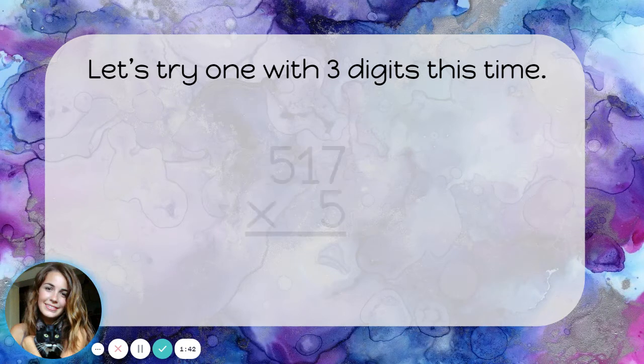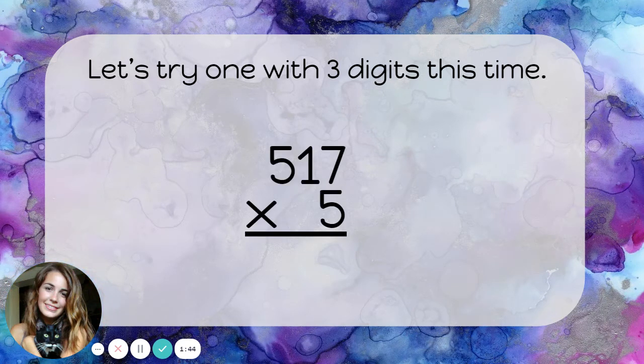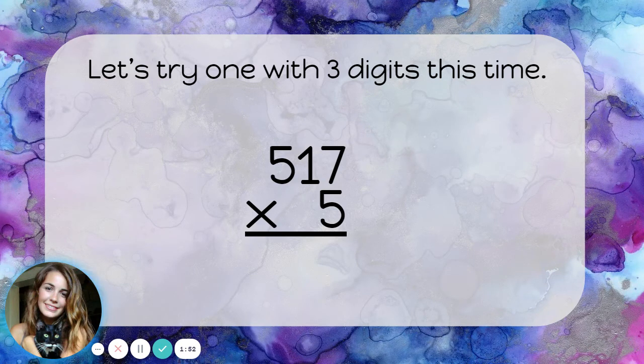Let's try one with three digits this time. Let's try multiplying 517 times 5. Once again, I'm going to start by multiplying the ones, and then I'll multiply by the tens, and then I'll multiply by the hundreds.